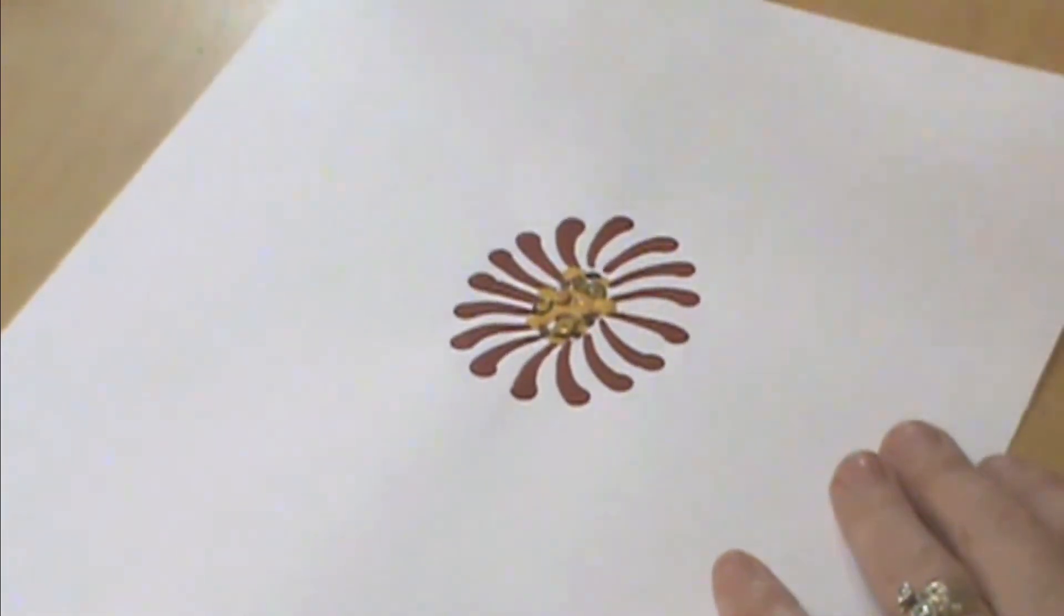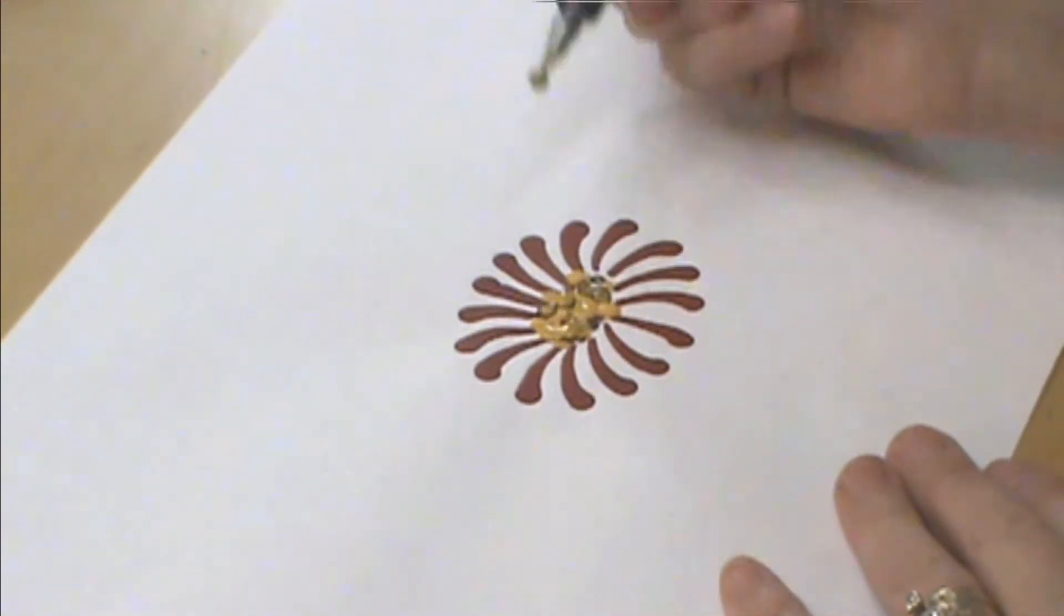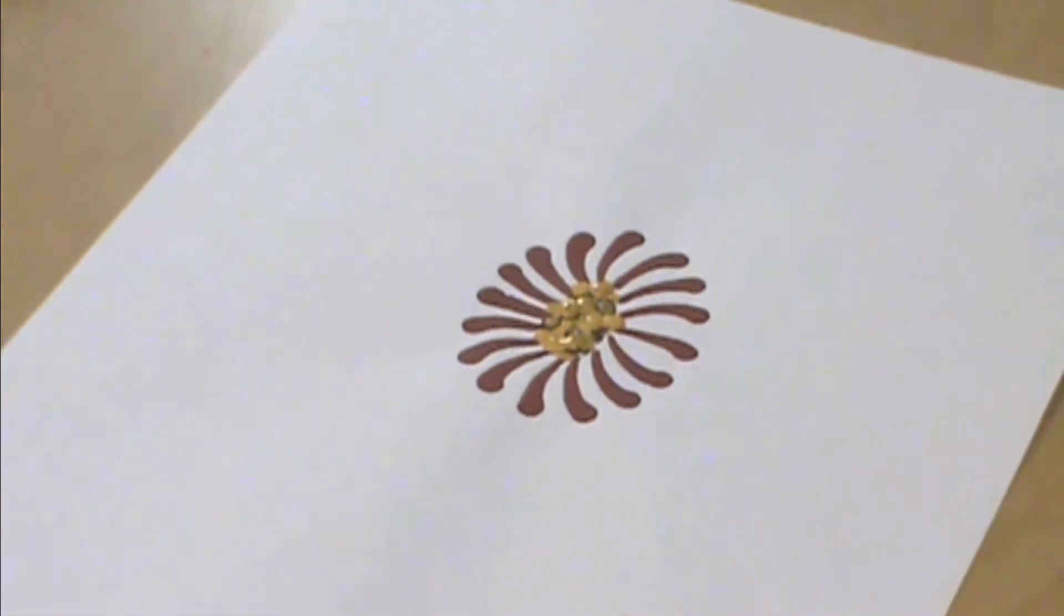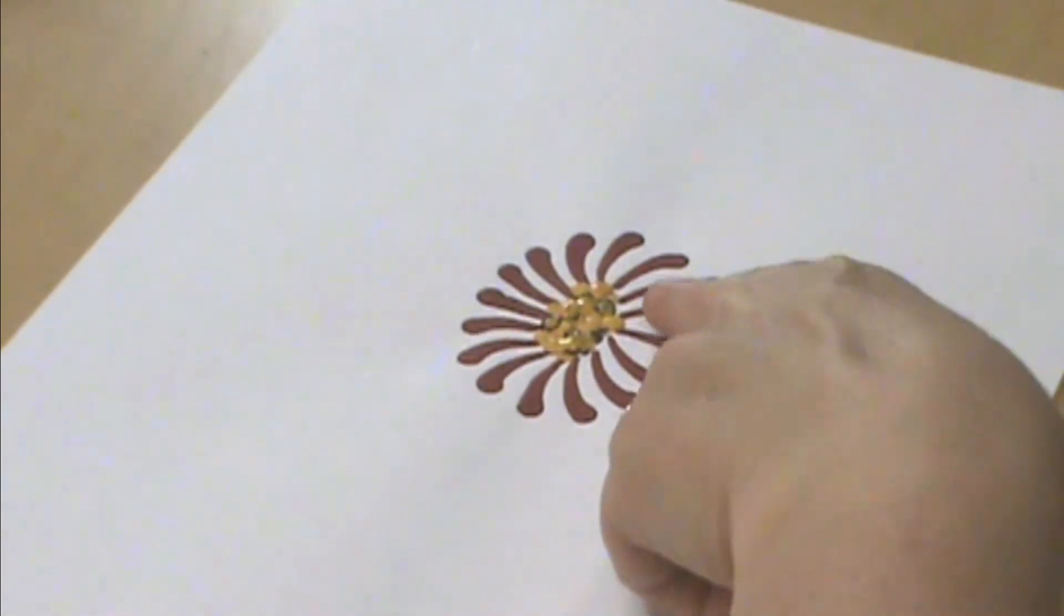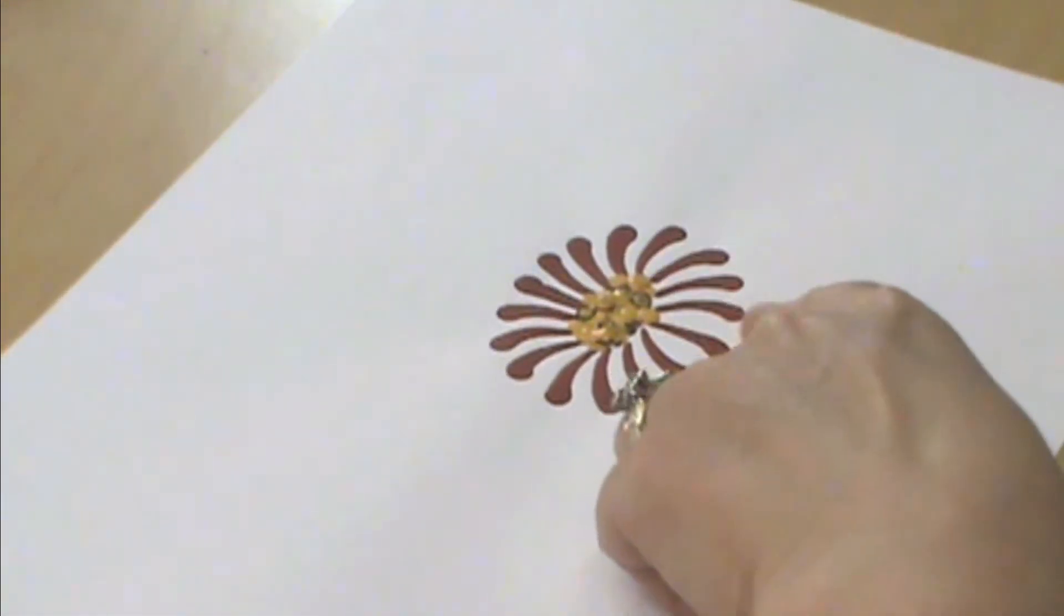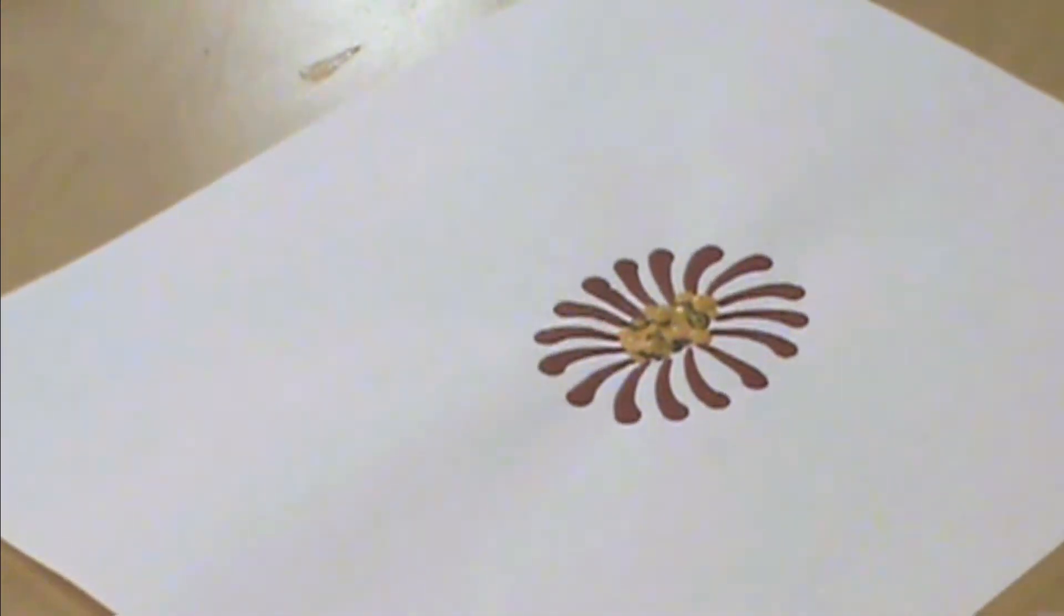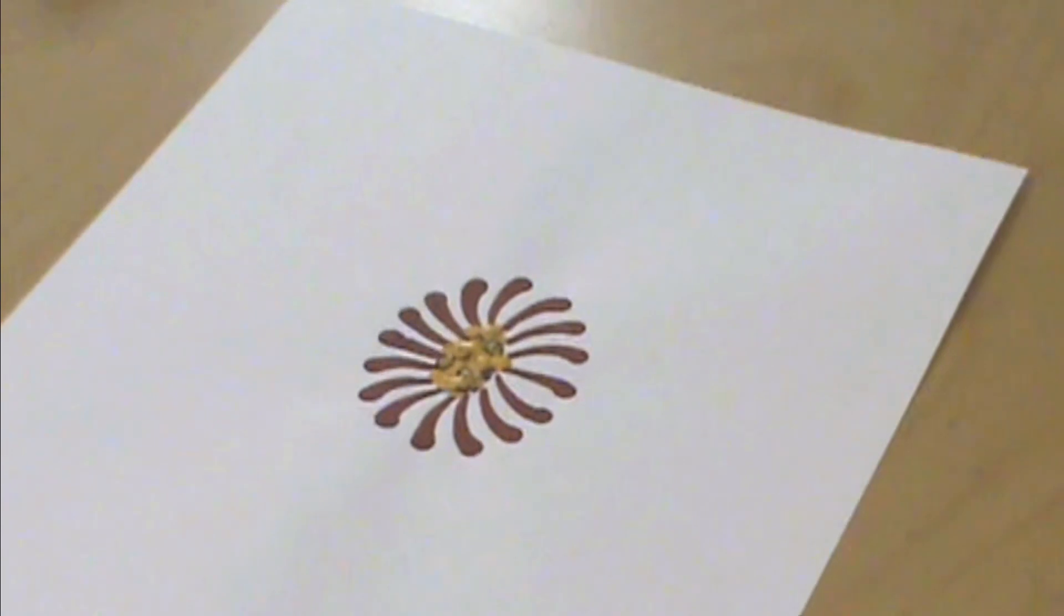But you can see by letting them dry in between that we're getting more of a dot shape. And that is how we do our daisy. I would probably do a long stem with our wax liner and maybe a leaf, a big leaf off to the side.